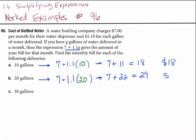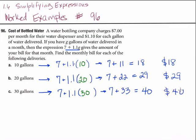And finally, a family getting 30 gallons of water delivered will have to pay the $7 fee for the dispenser plus $1.10 for each of 30 gallons. 30 times 1.1 is 33. 7 plus 33 is 40. This family's bill will be $40 for the month.